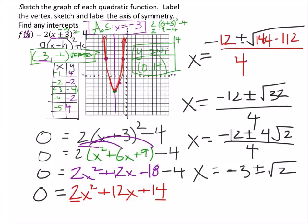So, in other words, our x-intercept would be negative 3 plus the square root of 2 and 0, but also negative 3 minus the square root of 2 and 0.